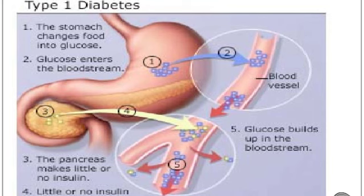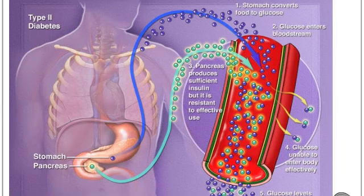The next part is about the cell and molecular biology of diabetes. Type 1 diabetes develops because there is little or no insulin entering the bloodstream from the pancreas, so insulin cannot cause cells in the liver, muscle, and fat tissue to take up glucose from the blood to store it as glycogen. In type 2 diabetes, the pancreas produces sufficient insulin but it is resistant to effective use, so glucose is unable to enter the blood effectively.